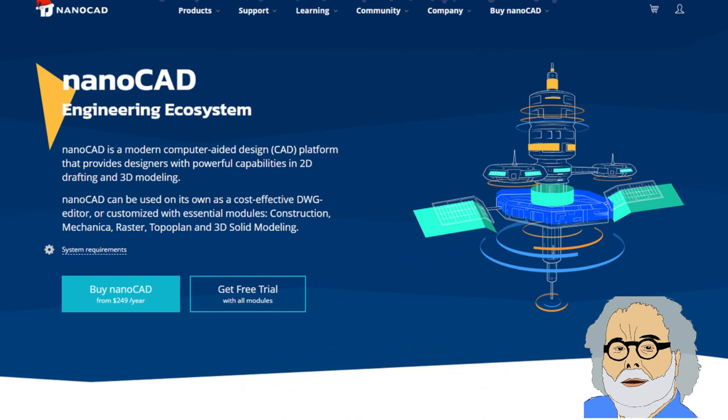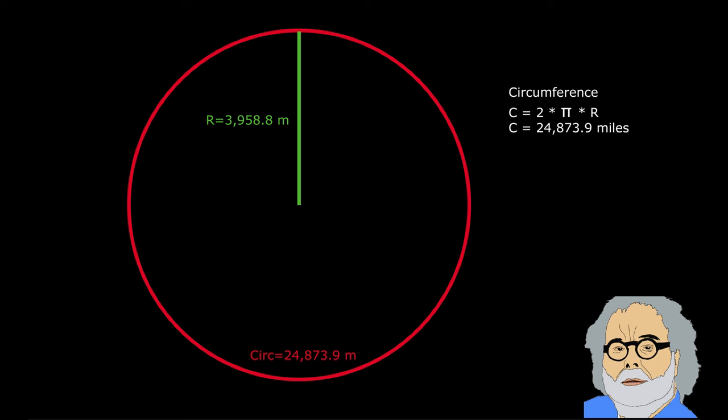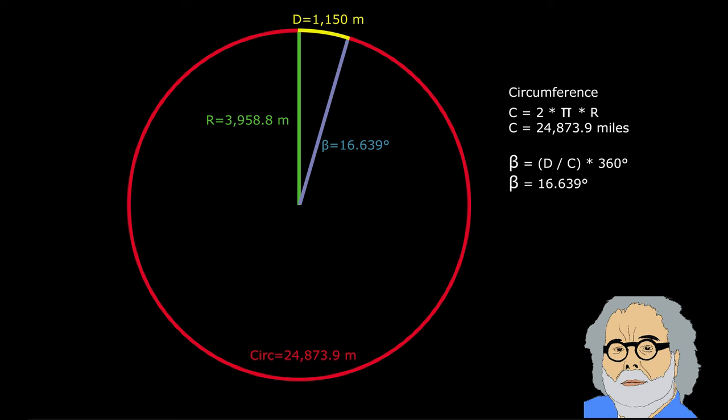When I calculated the angle in order to get the distance over the surface of 1150 miles, the distance Baer claims for Michigan to Florida, it began to dawn on me. The formula is quite simple: the angle is the distance divided by the circumference of the earth, and the result times 360 degrees. So 1150 over 24,875 times 360 comes out to be 16.639 degrees.